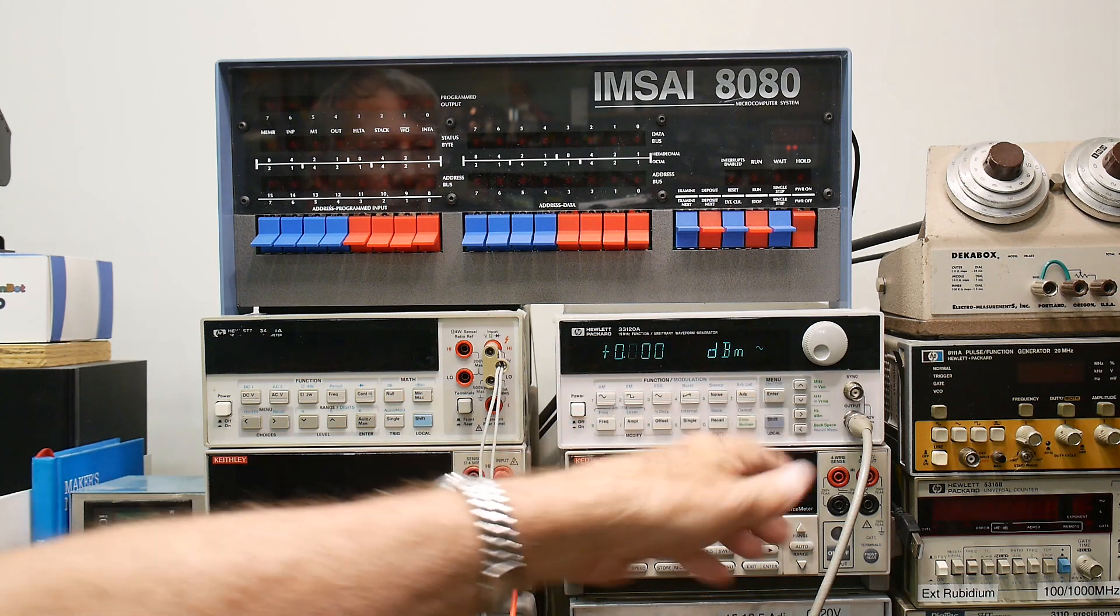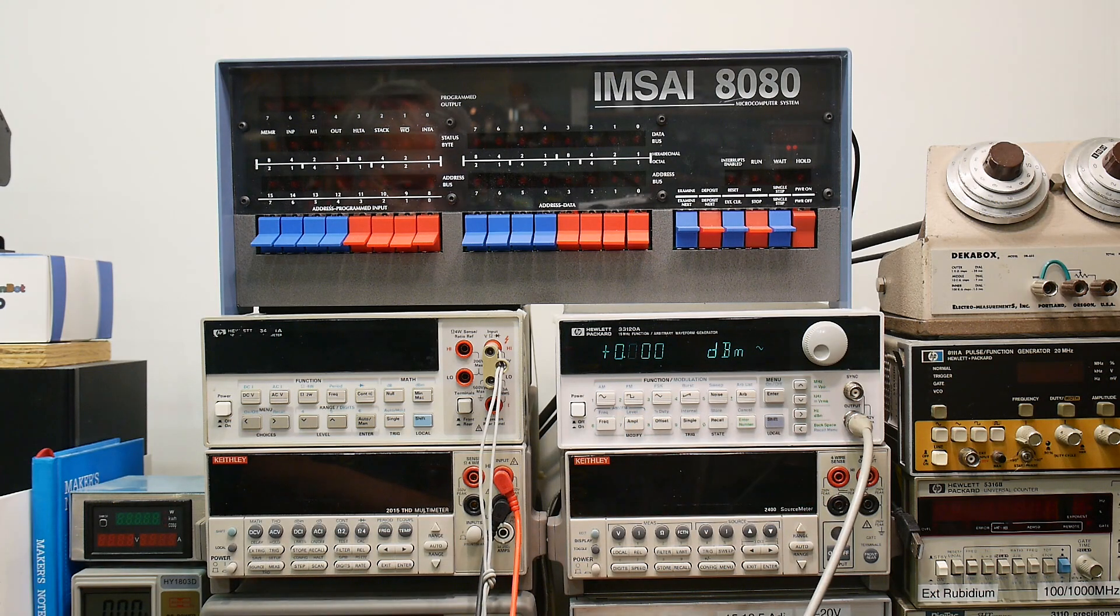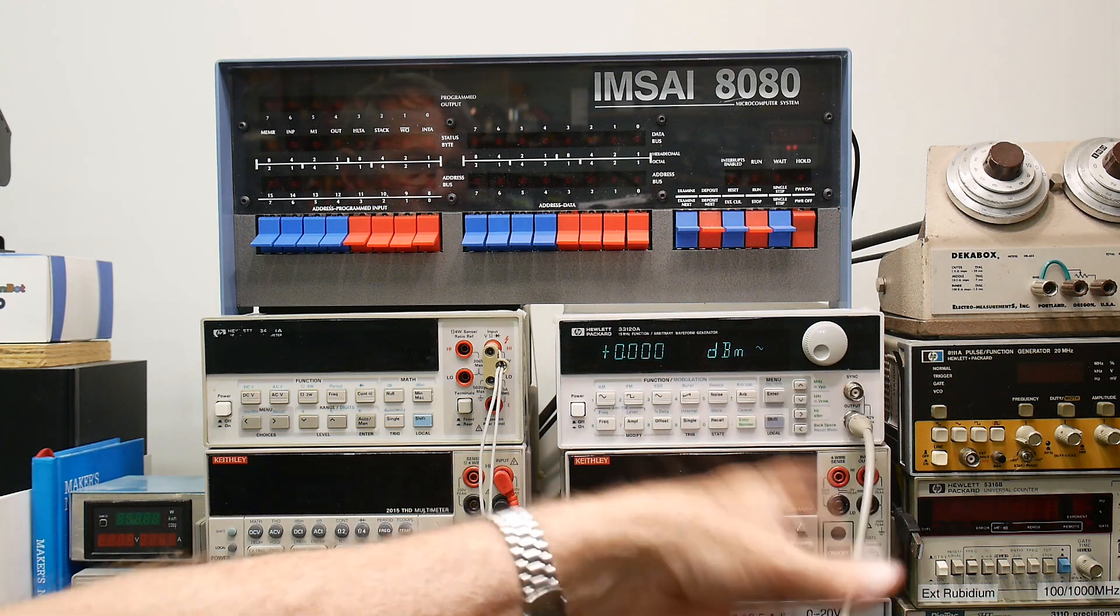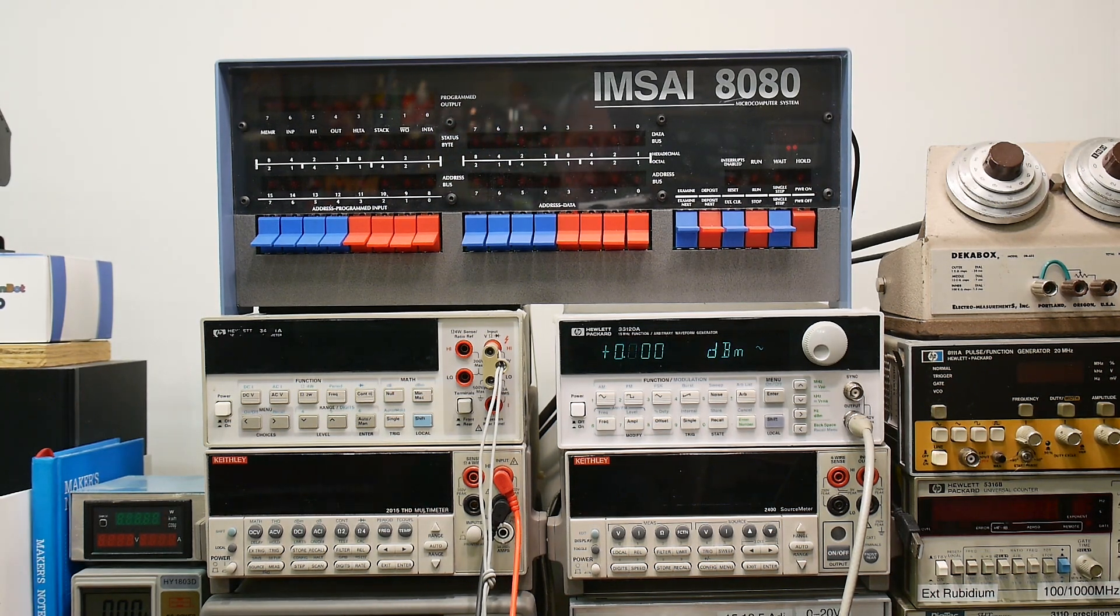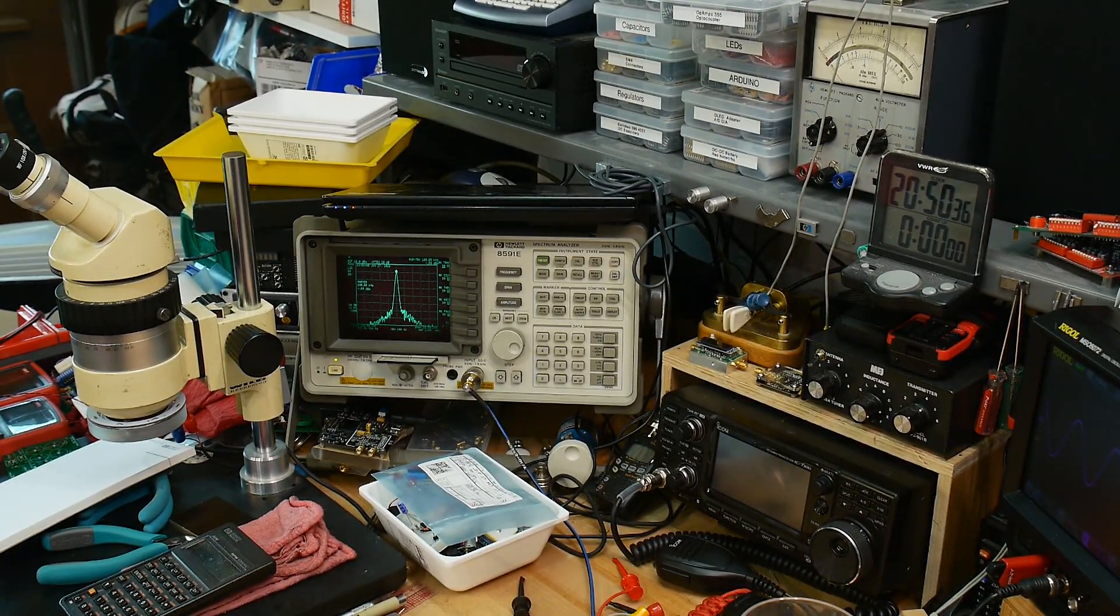So it's outputting here and dBm has to go into a 50 ohm load in order to be measured correctly. This is a spectrum analyzer over there. So let's go take a look at that one.